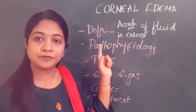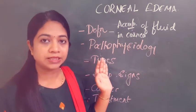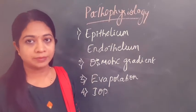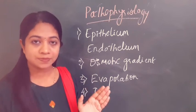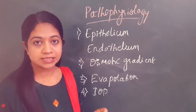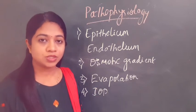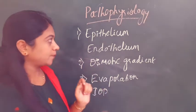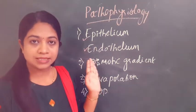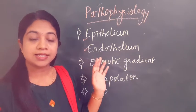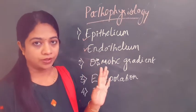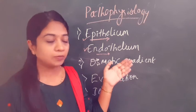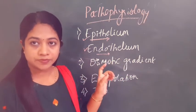The accumulation of fluid in the epithelial layer as well as the stromal layers of the cornea constitutes corneal edema. Regarding the pathophysiology, both the epithelium and the endothelium act as barriers for the entry of water into the cornea. They have tight junctions which do not allow fluid from either the tear film or the aqueous humor to enter into the stroma.